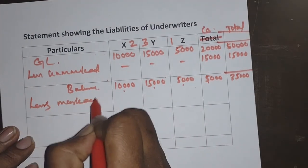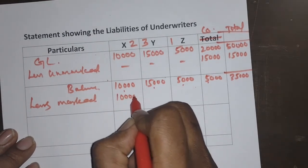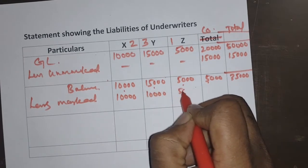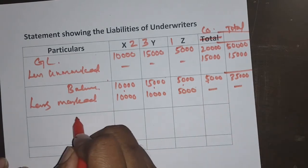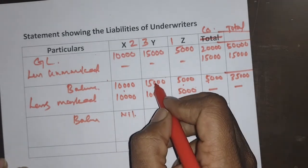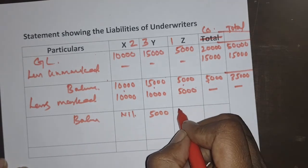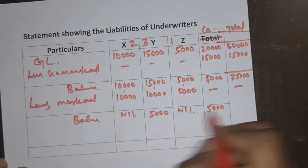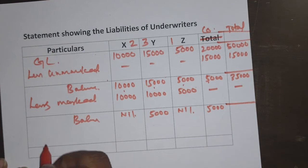Less marked application: X — 10,000, Y — 10,000, Z — 5,000. This does not apply to the company column. Balances: X: 10,000 minus 10,000 = nil; Y: 15,000 minus 10,000 = 5,000; Z: 5,000 minus 5,000 = nil; Company: 5,000 pending. Total balance: 5,000 plus 5,000 = 10,000.